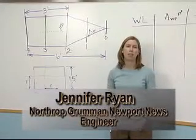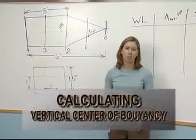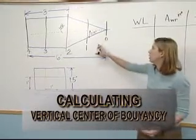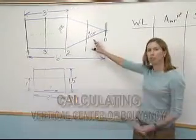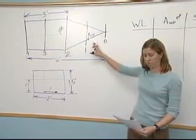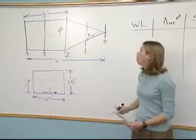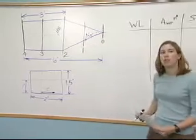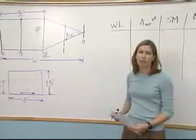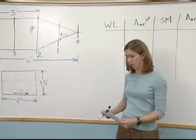Now we're going to learn how to calculate the vertical center of buoyancy of our vessel. We're still using this pointy-shaped barge shown to my right. For this calculation, we're going to need water plane areas instead of section areas.